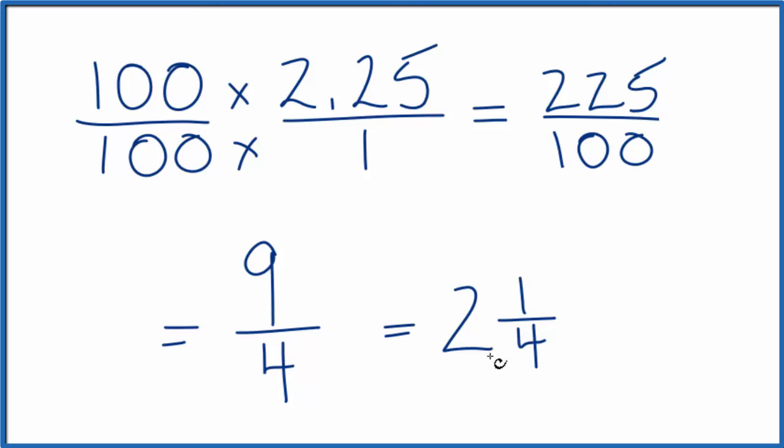So this is a mixed fraction. 2 and 1 fourth, that's also equal to the decimal 2.25.